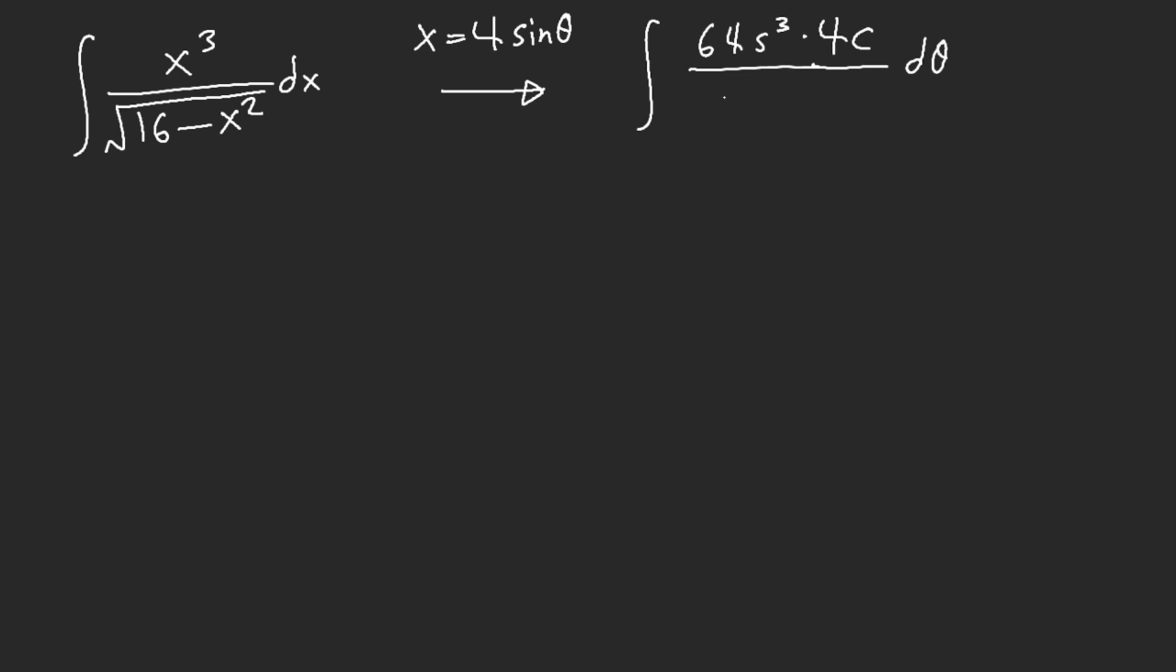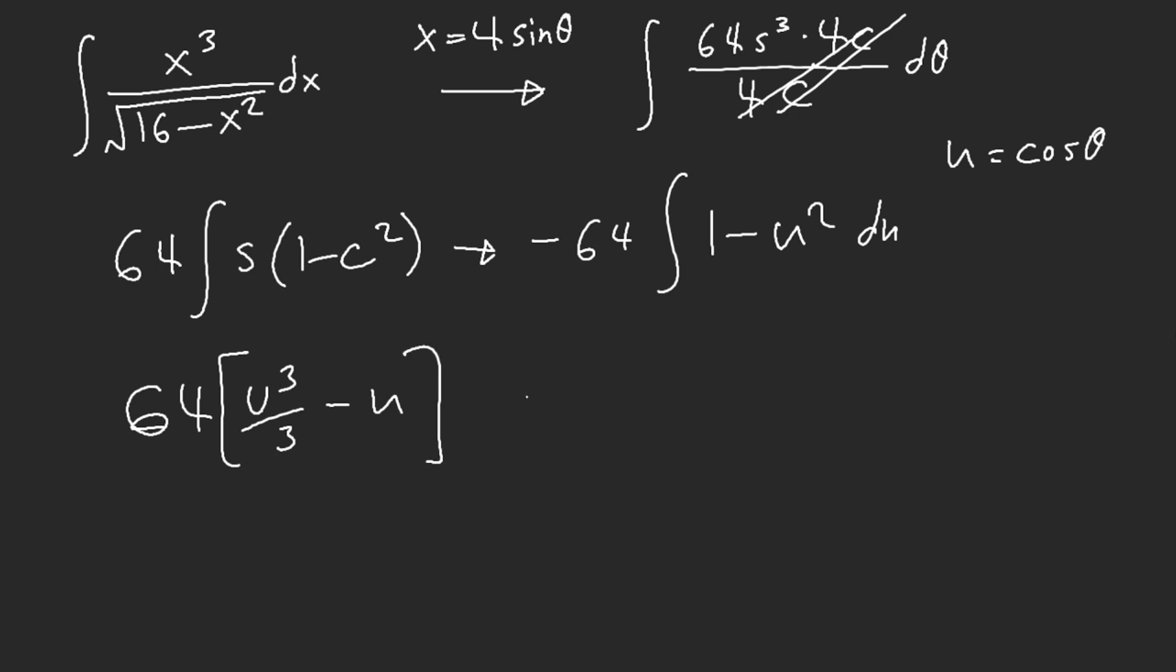I ended up with 64 sine cubed times 4 cosine theta. They cancel out and I got 64 times 1 minus cosine squared. Now it's negative 64 times 1 minus u squared where u equals cosine theta. Now I got negatives so I changed this to 64 times u cubed minus 3 minus u. Then I got 64 over 3.